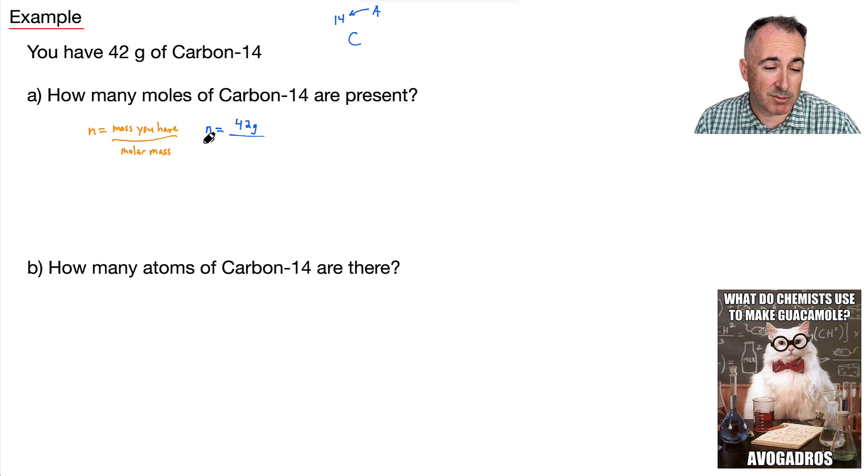Well, what about the molar mass? Remember I showed you that the mass number, A, that tells you how many grams per mole. In other words, this is 14 grams for every mole. And look, the grams will cancel out. The mole comes on top. You have n equals this many moles. So we have 42 grams divided by 14 grams per mole.